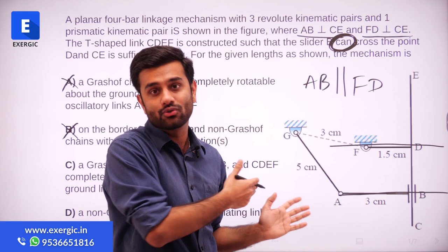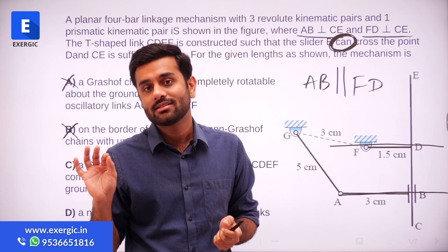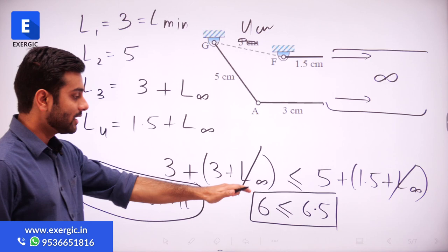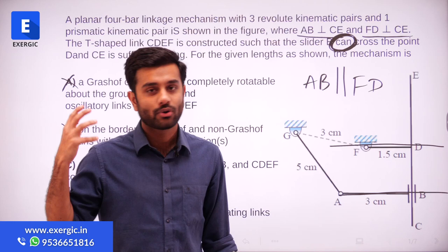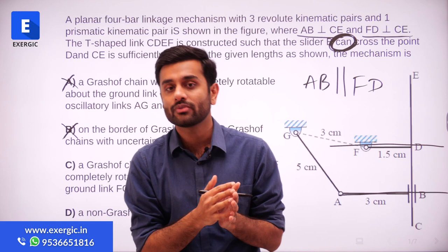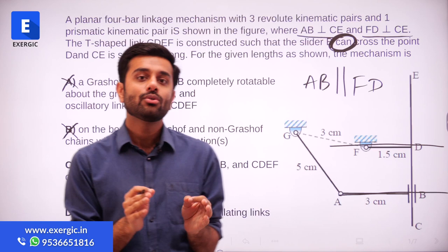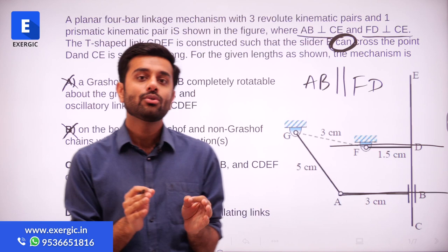The discussion using the 3R1P infinity method is validated by the animation. The impossible triangle situation never actually arises because B and D never approach each other. The debate over the word 'can' can now be ended — the actual mechanism confirms it is a Grashoff chain. We conclude the answer for this question is a Grashoff chain, and there is no point in challenging this question. I don't think any challenge done for this question will be accepted.